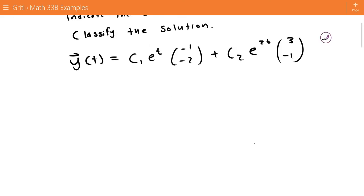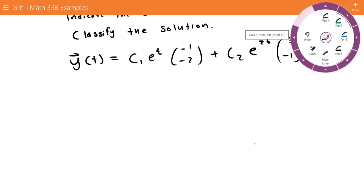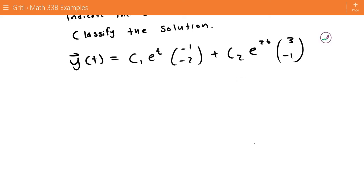So since the two eigenvalues are the coefficients of the t's on our exponential, and we can see we have two positive eigenvalues, so this is going to be a nodal source.